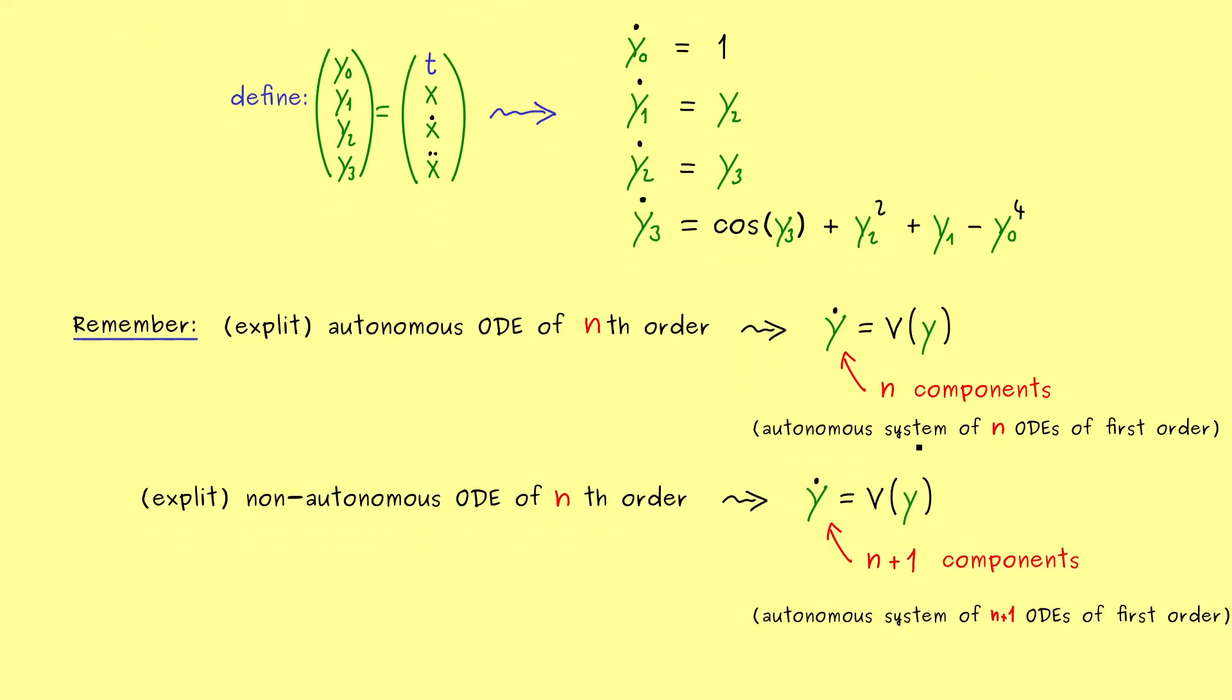Okay there we have it. The result here is again an autonomous system of ODEs of first order. And this explains why in theorems and propositions we will always take this form for a general ODE. It is not a restriction at all because we can always translate back to the original ODE.